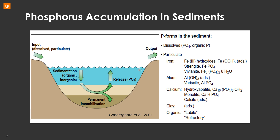Phosphorus is really reactive and forms bonds with a lot of different elements, including iron, aluminum, and calcium. It also adheres to clay and organic particles as well.